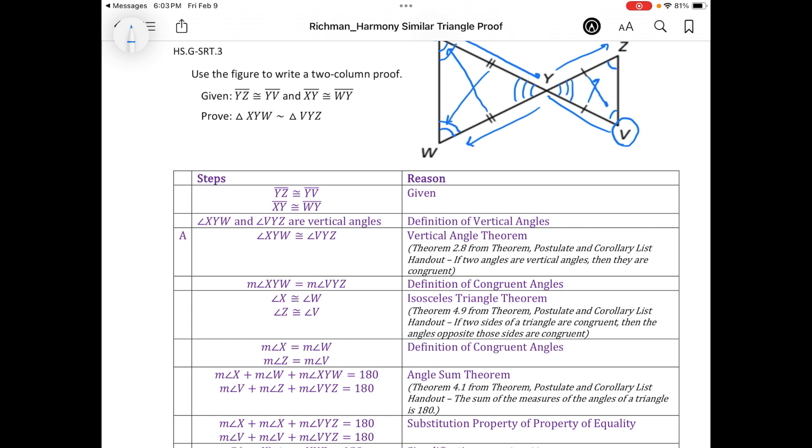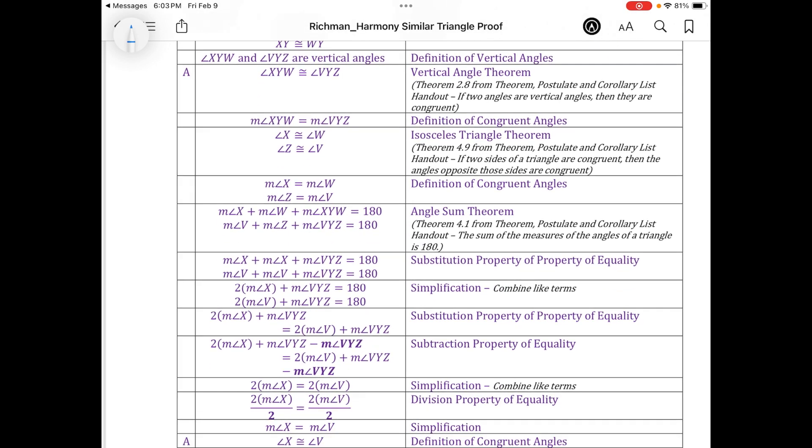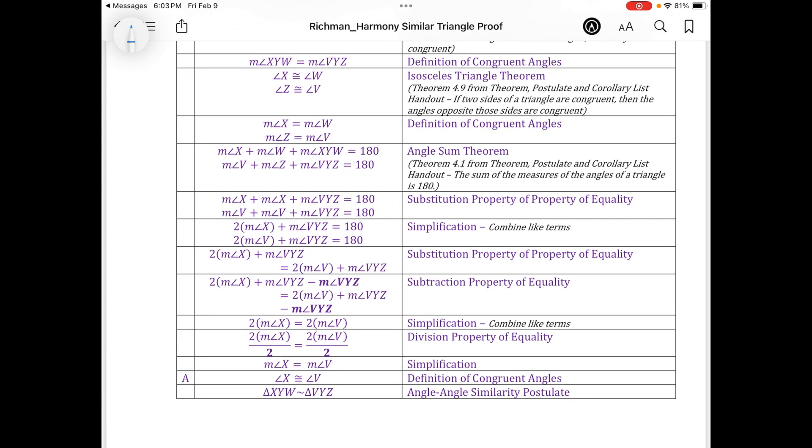So then I thought, well gosh, I've got these measures happening here. Perhaps I could do angle-angle for similarity. So then I started with the angle sum theorem because I knew that the sum of the measures of the angles in a triangle must be 180 degrees. So if I added the measure of angle X plus the measure of angle W plus the measure of angle XYW, that had to be 180 degrees.